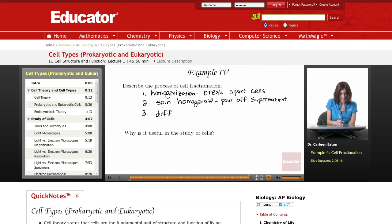This process of pouring off the supernatant, spinning it, pouring it off, and raising the speed is called differential centrifugation.